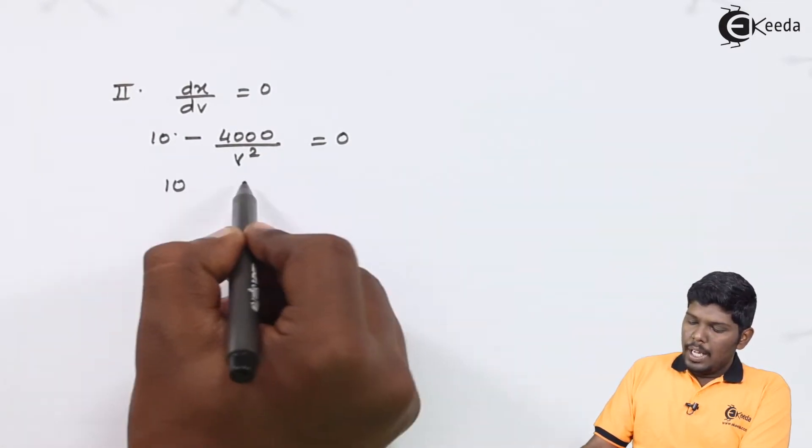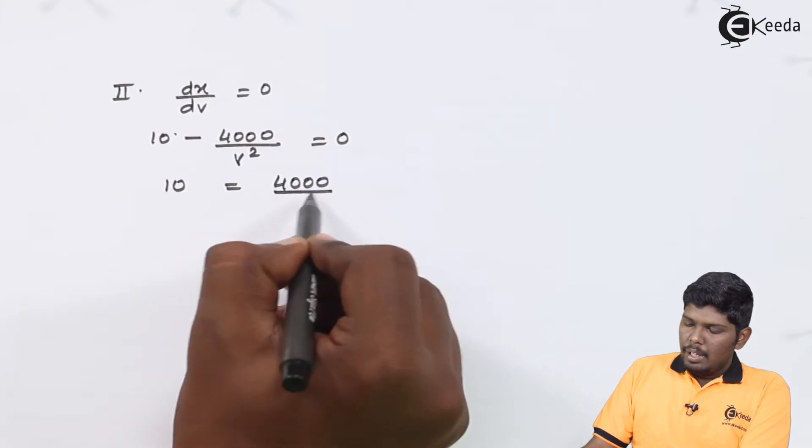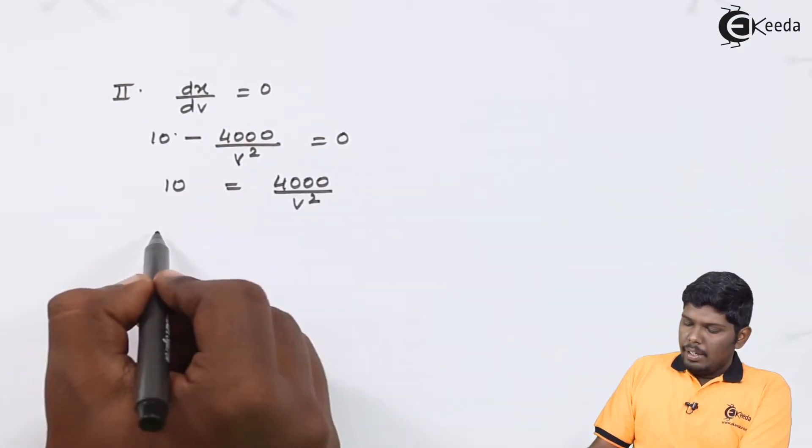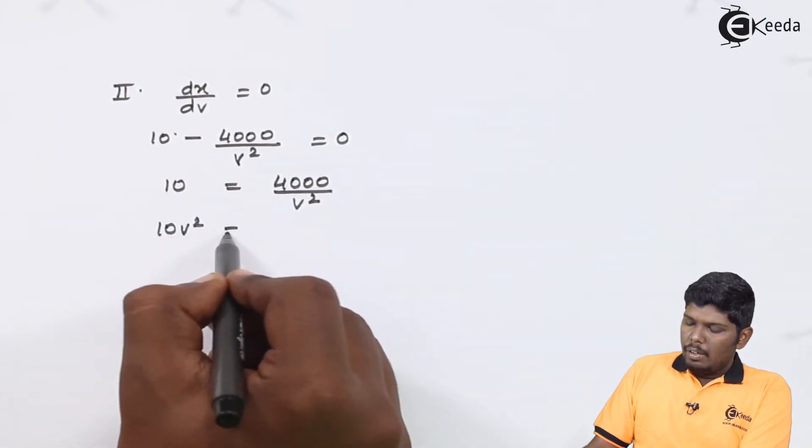That will give you 10 equals 4000 upon V square. 10V square will be 4000.